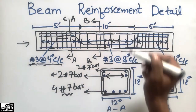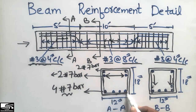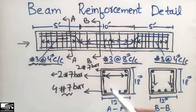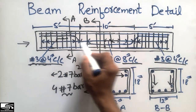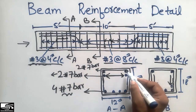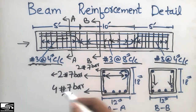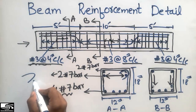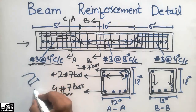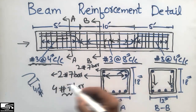The stirrups are shown in the elevation view and also in the cross-section. In the cross-section you can see the stirrup has a hook at the end, which is known as a seismic hook. The length of this hook bend is 4d, where 4 is a constant and d is the diameter of the stirrup bar, which is a number 3 bar. Using the value of d you can calculate the length of this hook.